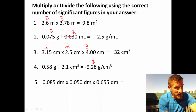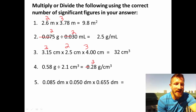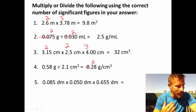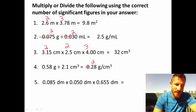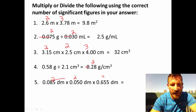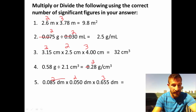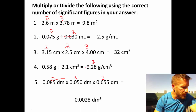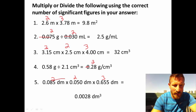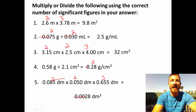The next problem also calculates a volume, this time in decimeters cubed — which is the same as a liter. The three numbers have 2, 2, and 3 significant figures respectively, so we want 2 significant figures in our answer. The answer is 0.0028 decimeters cubed, or liters. The leading zeros are placeholders, so we really only have 2 significant figures in our answer.